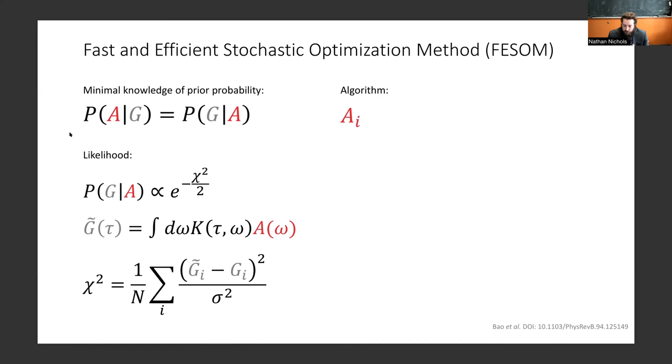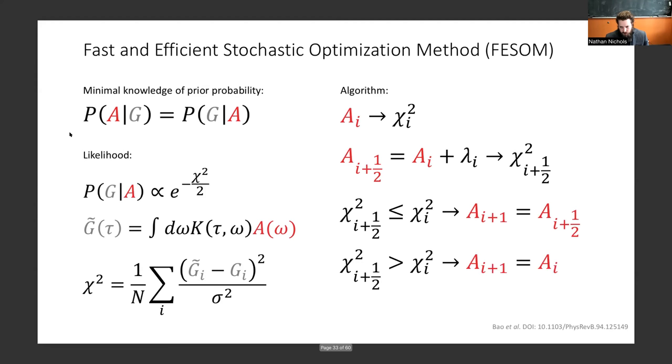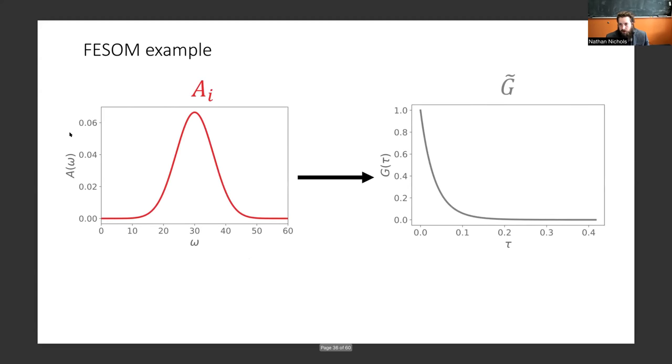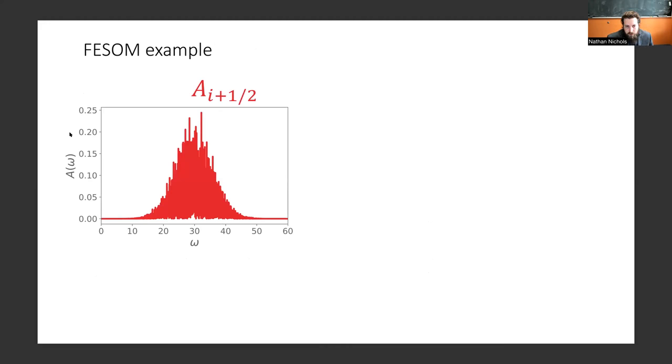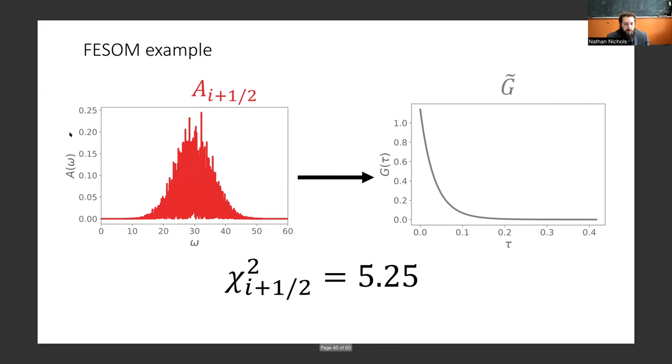The while loop inside the algorithm goes like this. We have some spectra, we calculate the chi-squared. Then we propose some update to that spectra by adding some random noise, which can be correlated. Then we calculate the chi-squared on that new spectra. If that chi-squared on the new spectra is less than the chi-squared of the old spectra, we move on to the next iteration keeping the proposed spectra. Otherwise we keep the old spectra. And then we iterate. That's FISOM in a nutshell.